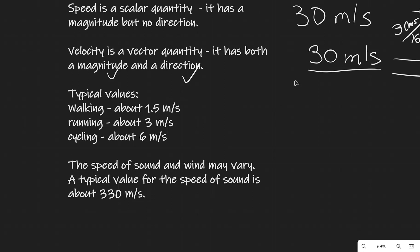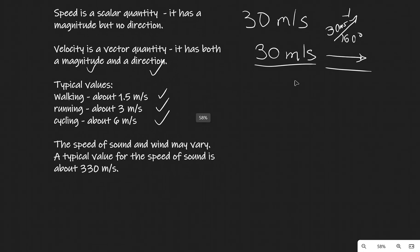Walking is around 1.5 meters per second — think of one and a half meter sticks. Running will be 3 meters per second. Cycling is about 6 meters per second. Note that the typical speed of sound is around 330 meters per second, but this can vary depending on air pressure and wind conditions.